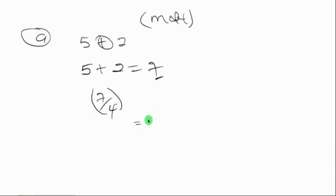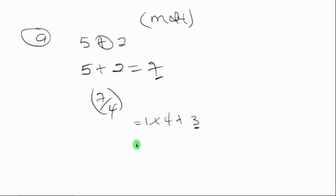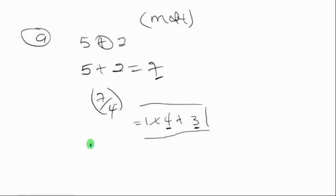We try 2 times 4 which is 8 — that's too big — so we use 1 times 4, which is 4, and add 3 to make it 7. So the remainder is 3. This expression method is especially useful when dealing with negative numbers.